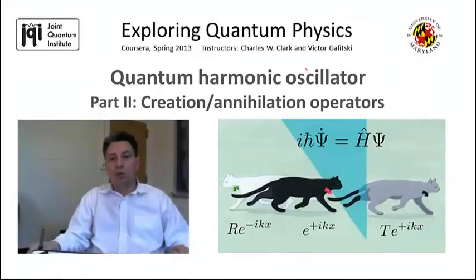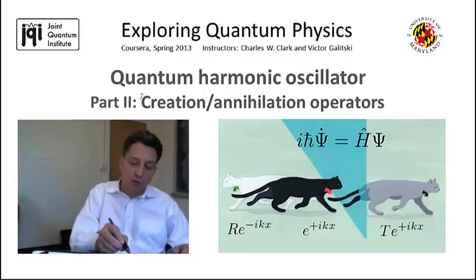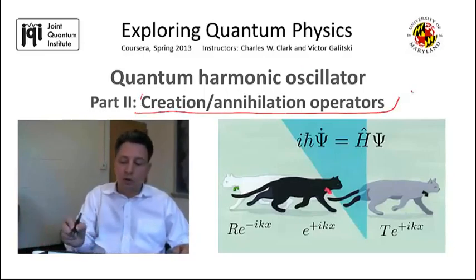So now we proceed with the technical solution of the quantum harmonic oscillator problem. I should mention that there exist many equivalent ways to solve this problem, but today I'm going to present a purely algebraic solution which is based on so-called creation and annihilation operators.